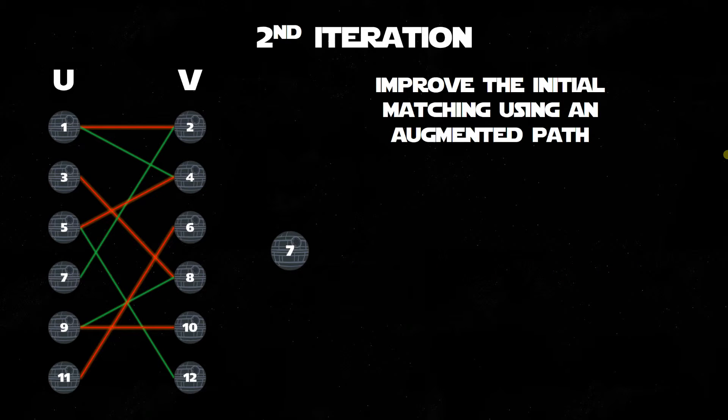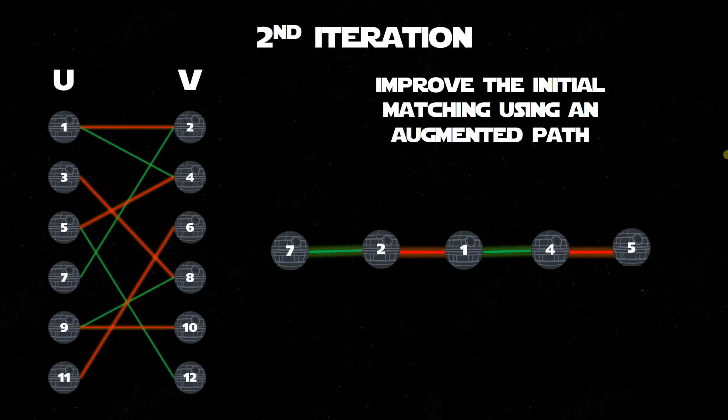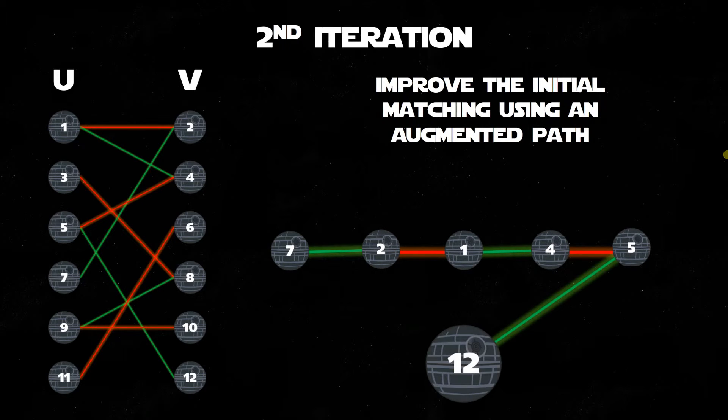Having created the first matching, we now need to improve it in the second iteration using an augmented path. This starts at each of the free vertices we have, in this case we only have 7, and follows sequential unmatched and matched paths, like so, until it reaches another free vertex, in this case 12.